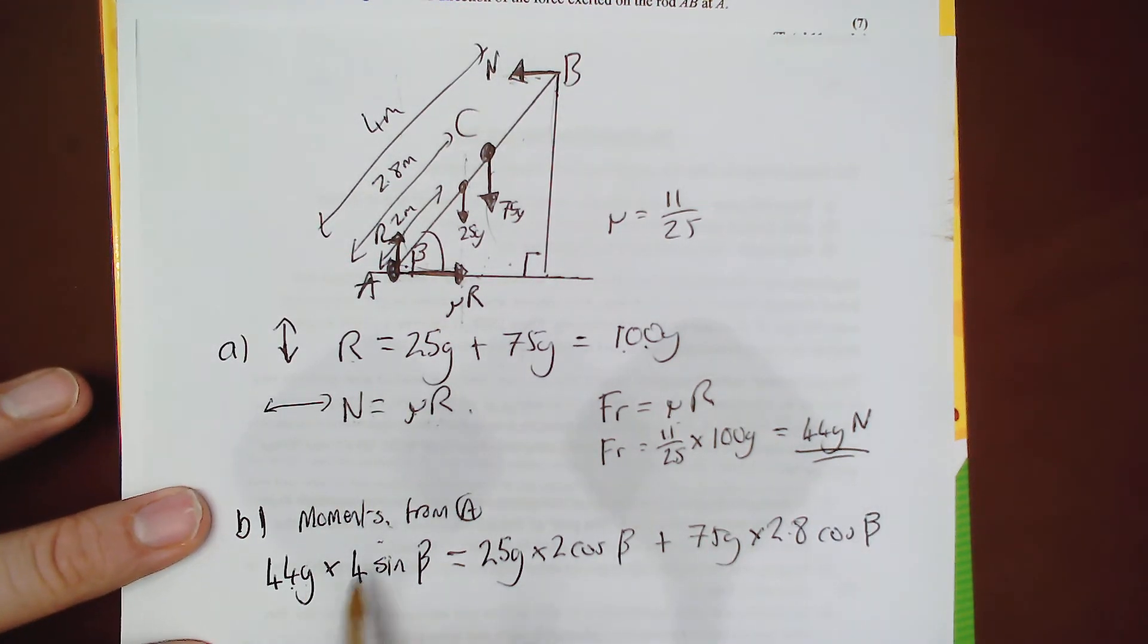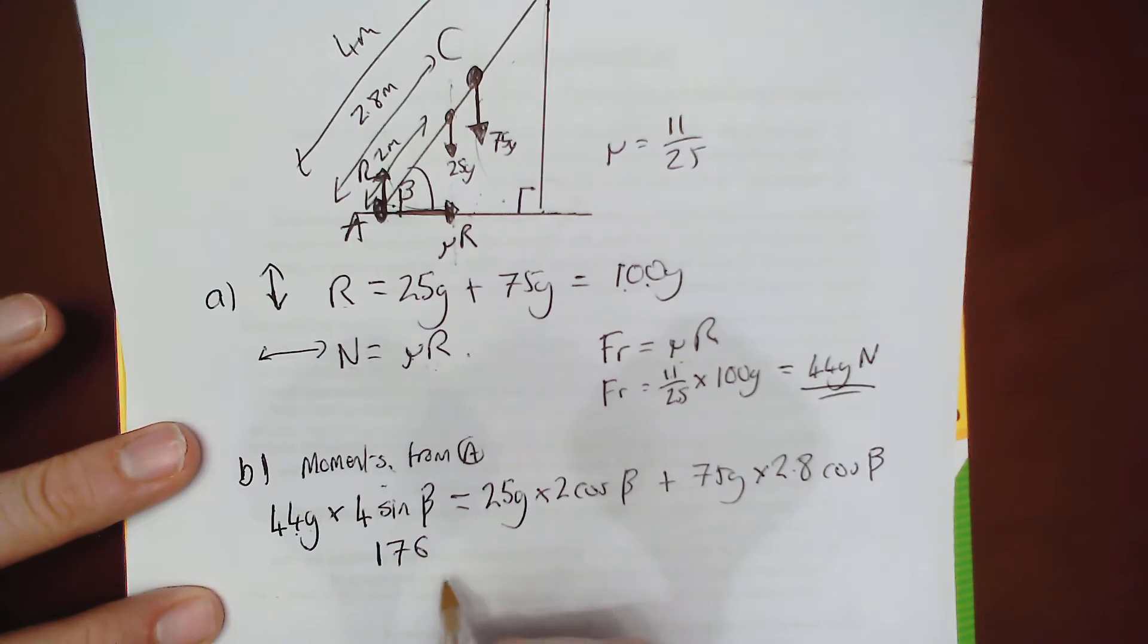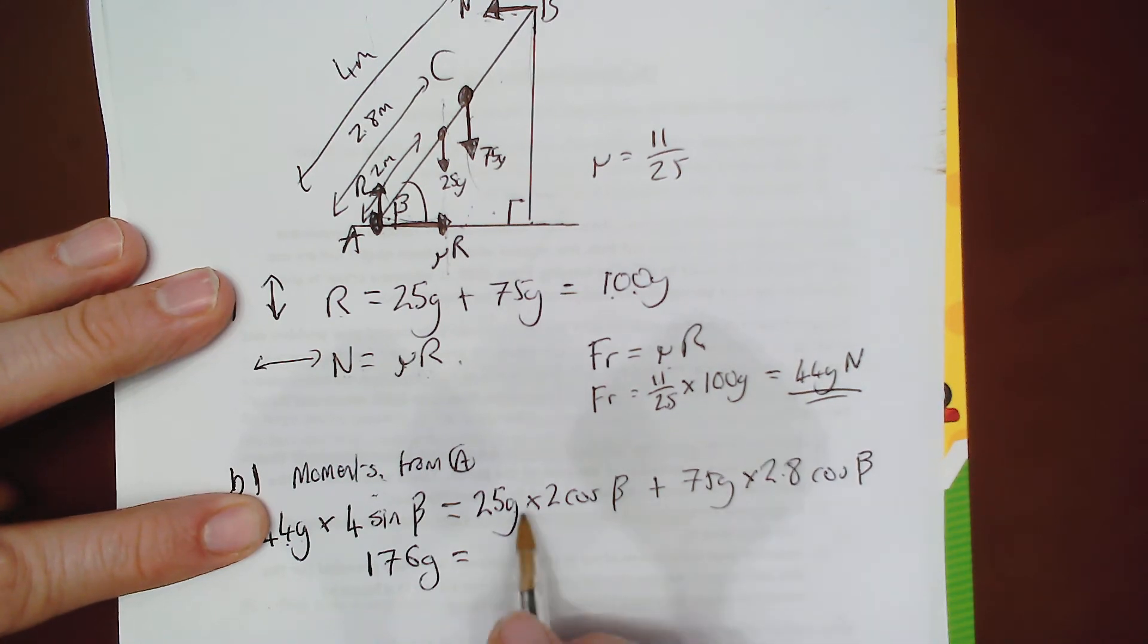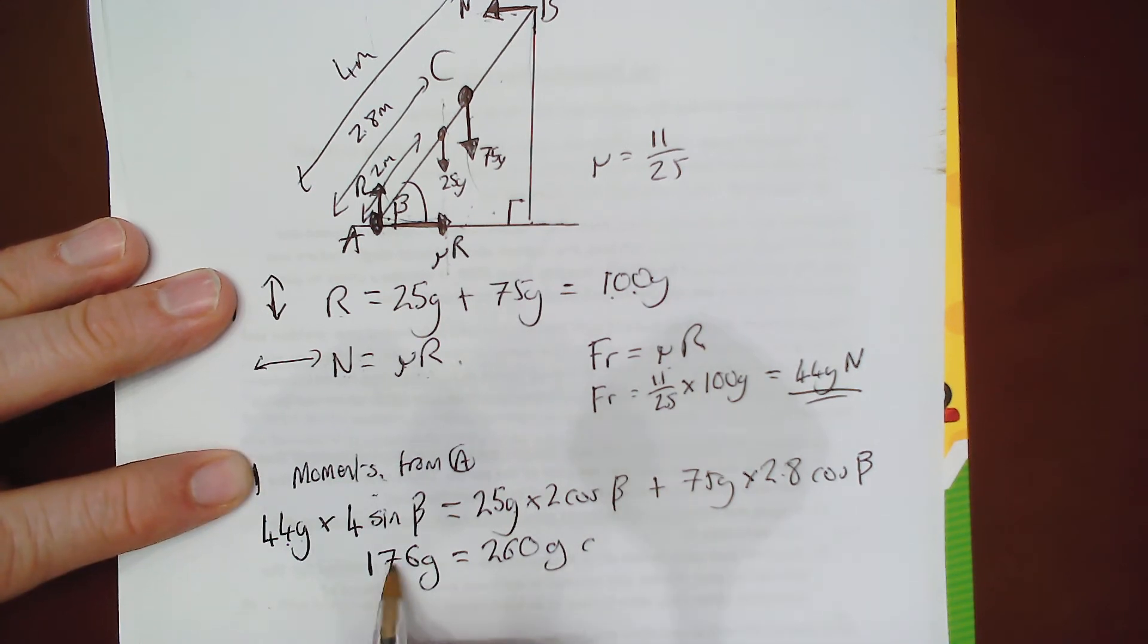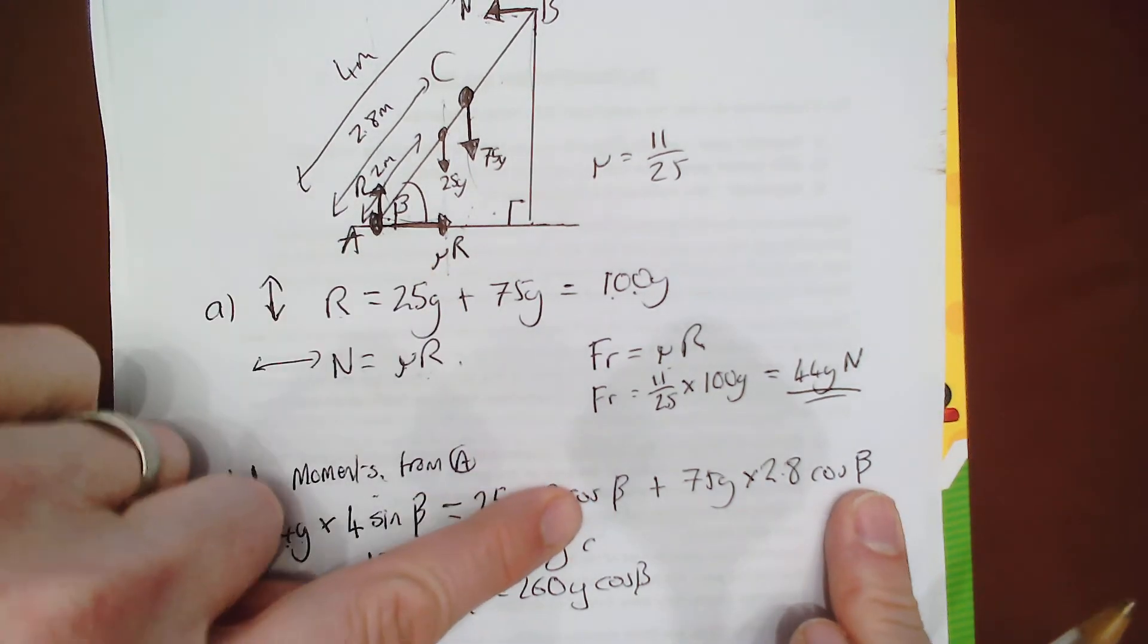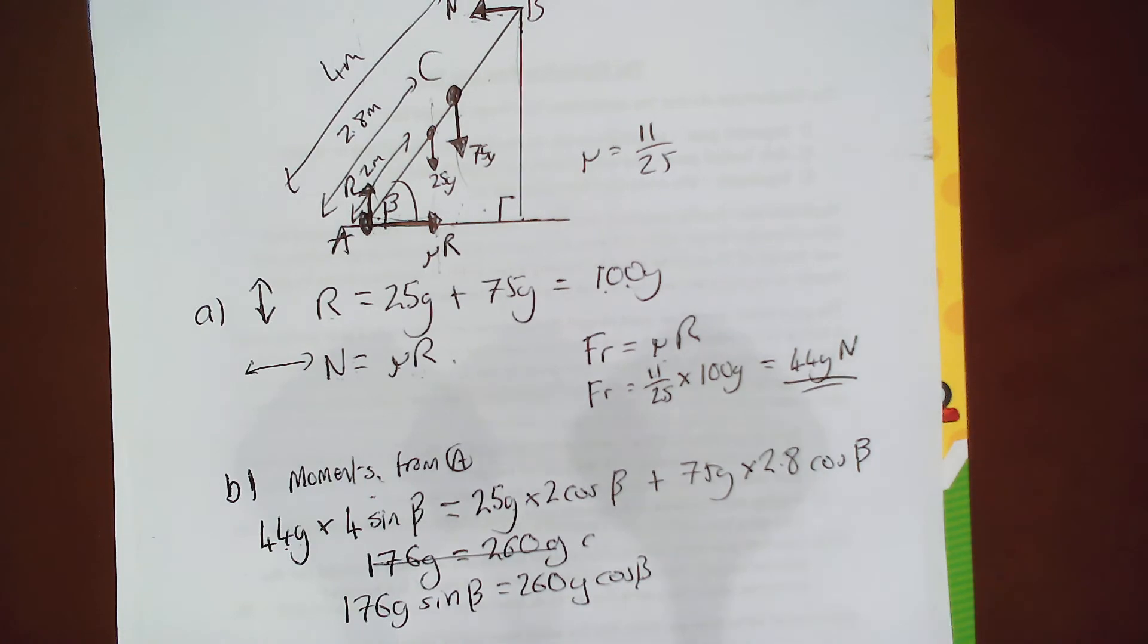Okay so 4 times 44. Let's tidy this up. 176g equals, now 25g times 2 gives you 50g, 75g times 2.8 is 210. Add these together, you get 260g. Sorry I've missed out the sign there. So that's 176g sin beta. I need to remember the angles. Cos beta, because these are both cos beta here. So I can just add together these coefficients. Well what do we get? We get sin over cos beta equals 260g over 176g. The g's cancel out. You can actually call that tan.